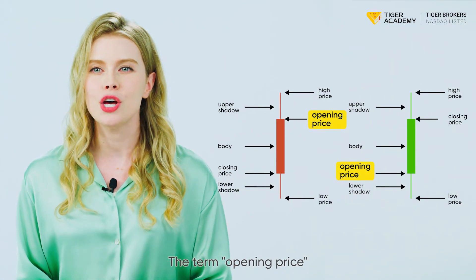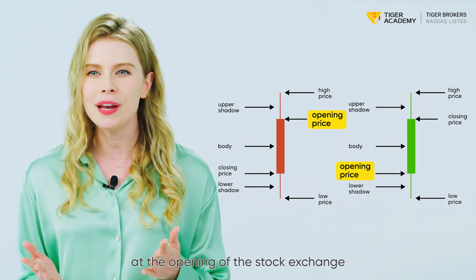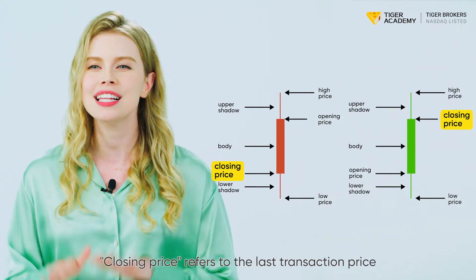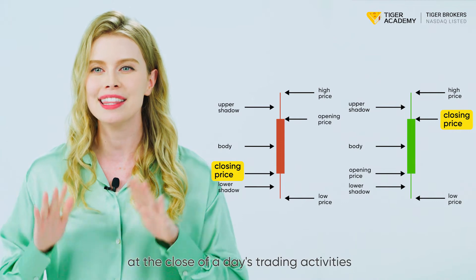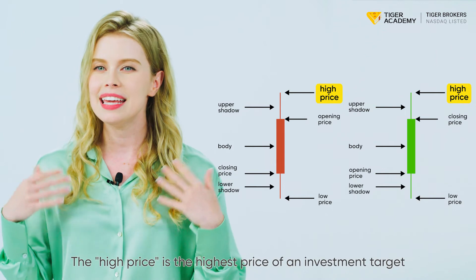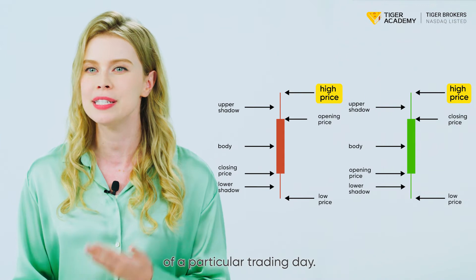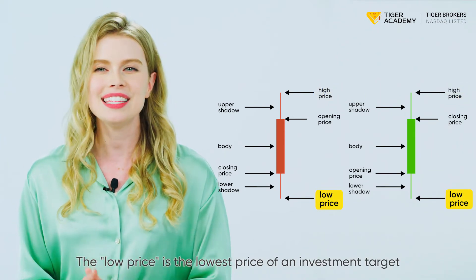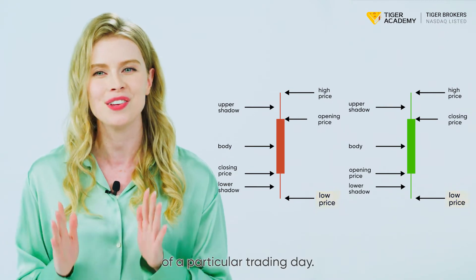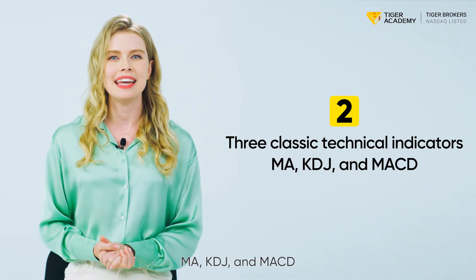The opening price refers to the price of the first transaction of a certain investment subject at the opening of the stock exchange on a particular trading day. The closing price refers to the last transaction price at the close of a day's trading activities. The high price is the highest price of an investment target from opening to closing of a particular trading day. The low price is the lowest price from opening to closing. Three classic technical indicators: MA, KDJ, and MACD.